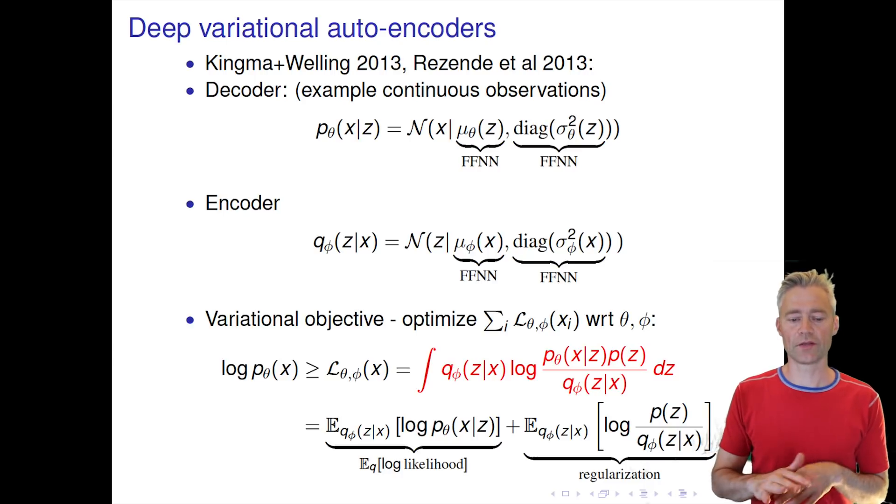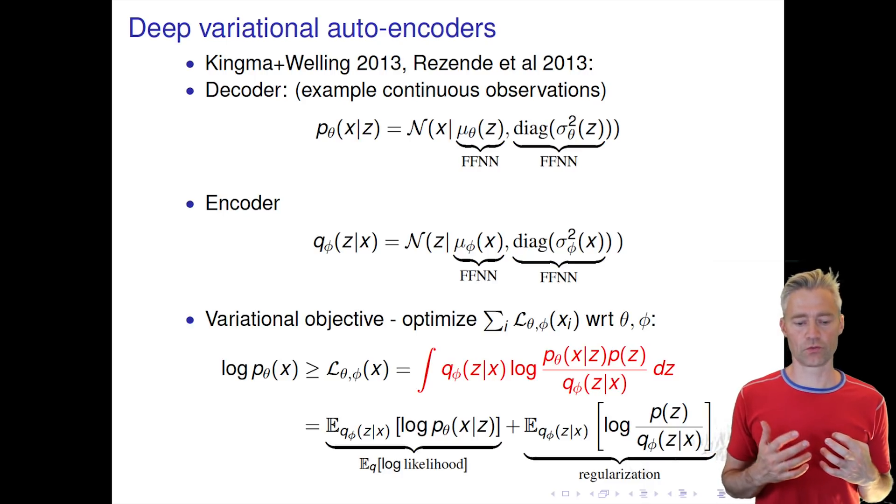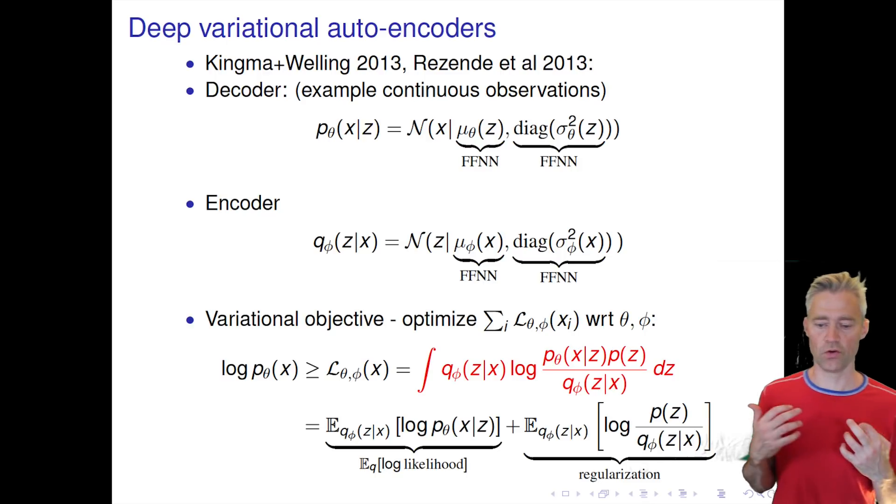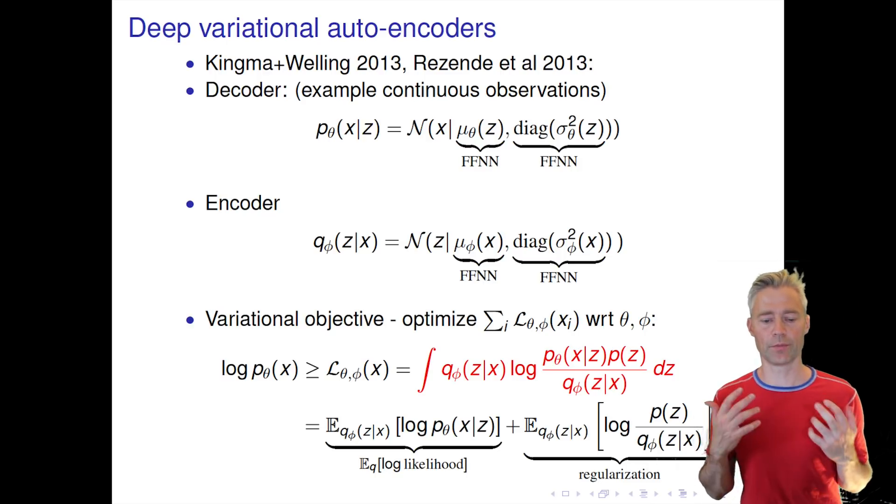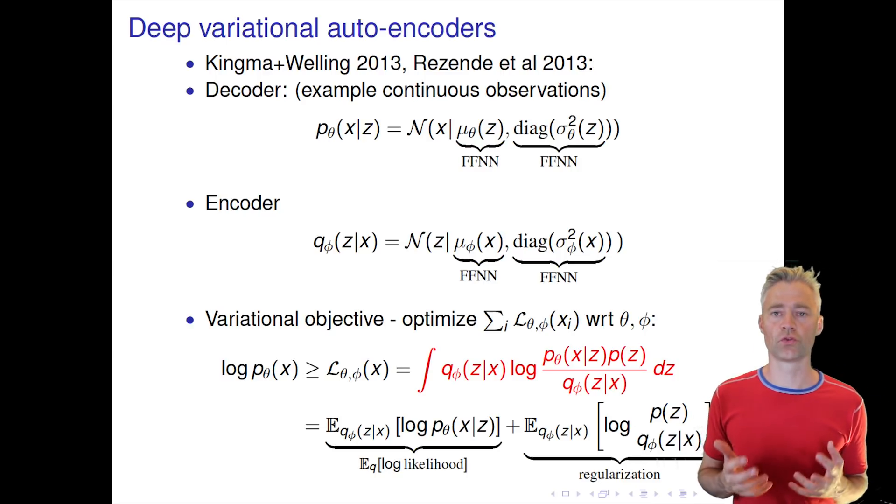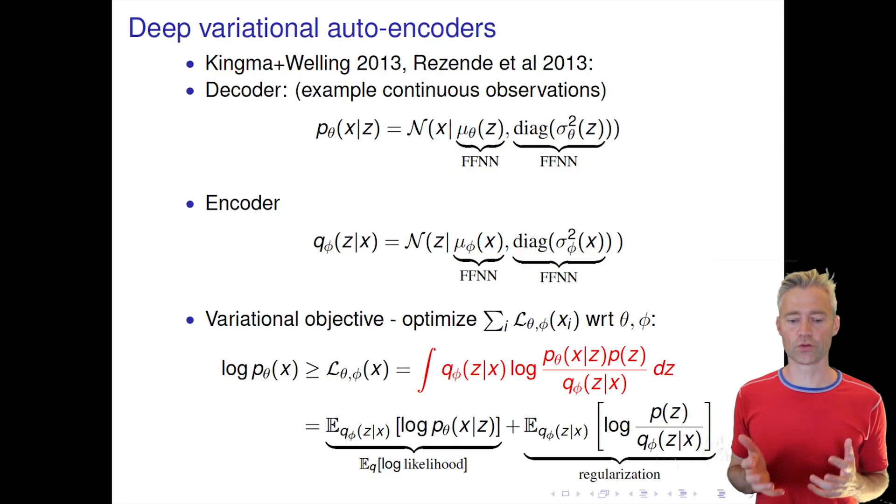We want to maximize the log likelihood, and here comes the beautiful thing where we can use the variational approach because we can write a lower bound on the likelihood.